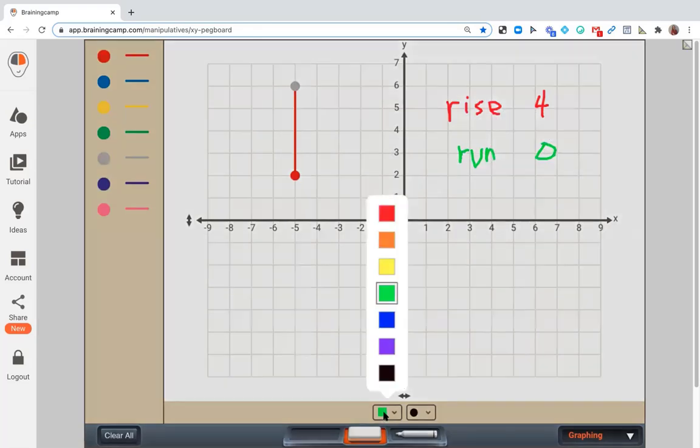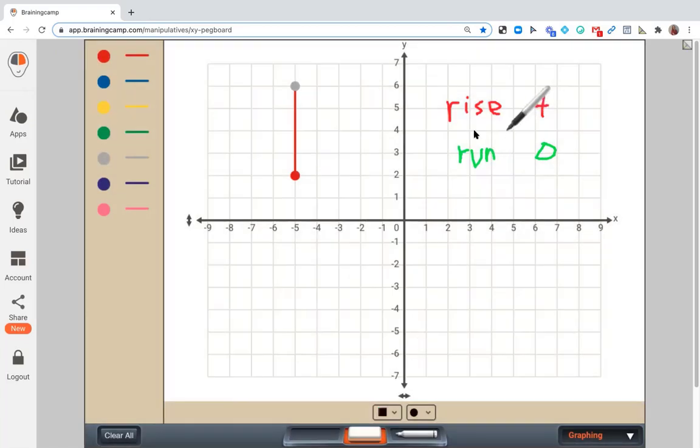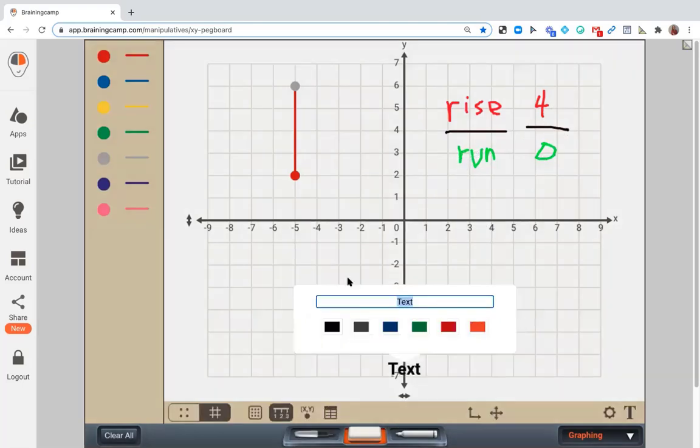And you can see when that happens, now we're dividing by zero. And in math, you really can't divide by zero. So because the zero is in the denominator, this now becomes a slope that is undefined.